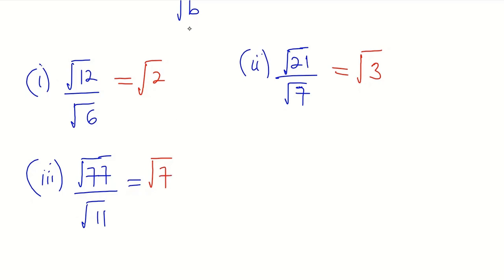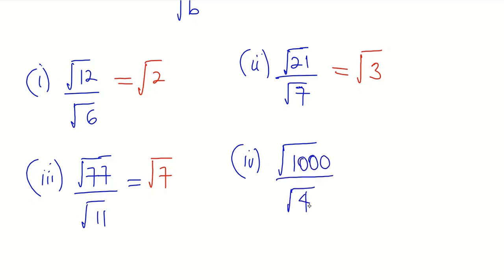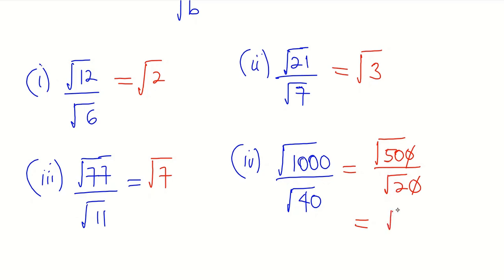Now consider the next example: square root of 1000 divided by square root of 40. We can simplify by noting that 2 goes into 40 twenty times and into 1000 five hundred times, giving us square root of 500 divided by square root of 20. Cancelling the trailing zeros, we get square root of 50 divided by square root of 2. Since 2 goes into 50 twenty-five times, our answer is square root of 25, which equals 5.